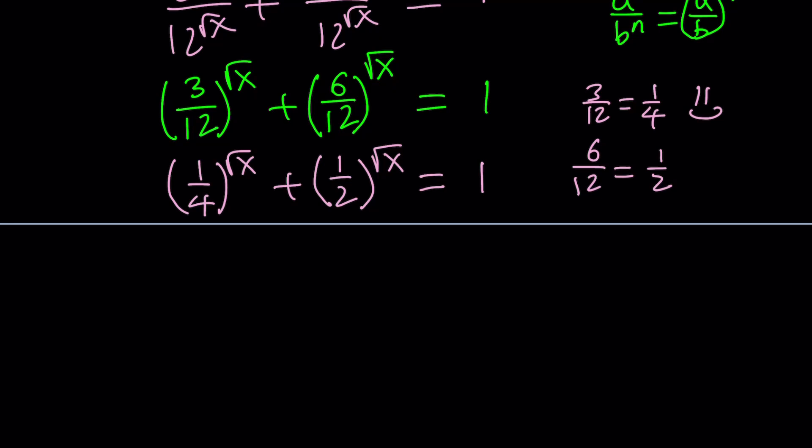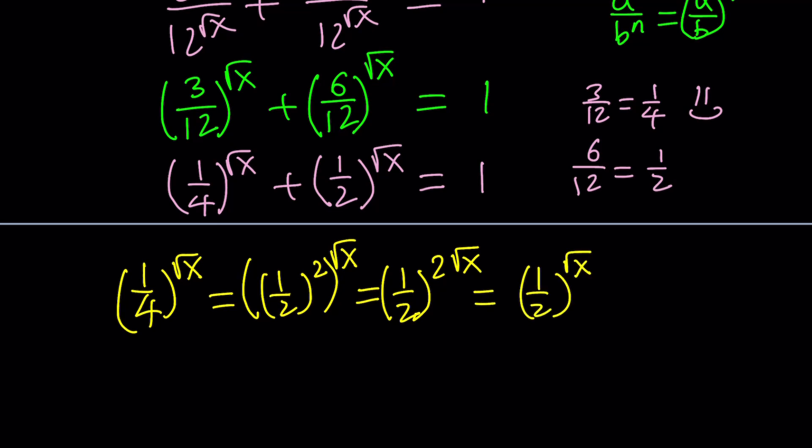What do we do next? We pay attention to the fact that 1 fourth is 1 half squared. 1 fourth to the power square root of x can be written as 1 half squared to the power square root of x. And then the rule says we are supposed to multiply the exponents which gives us 1 half to the power 2 times square root of x. Which can then be written as 1 half to the power square root of x to the power 2. Because again they are multiplied in a different way, but we have the commutative property. So a to the power mn is the same as a to the power nm.